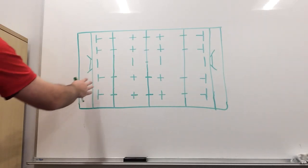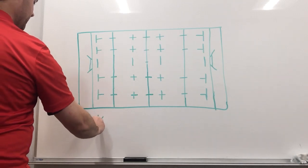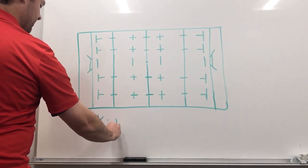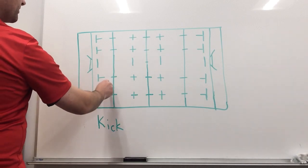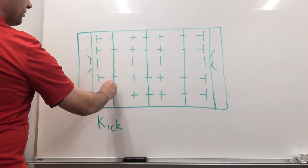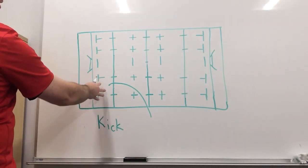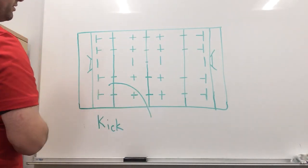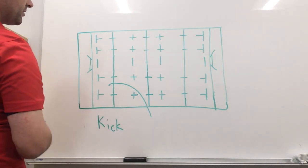So when we're in our own 22, we want to get up the field as quickly as possible and usually the most common technique to do that is simply a kick and there are several different kinds of kicks that we could use in this situation. The most common is usually just a simple kick to touch. We kick the ball straight out. Because we are behind our own 22, we can kick the ball straight out and the other team will get the line out where the ball crosses the touch line.